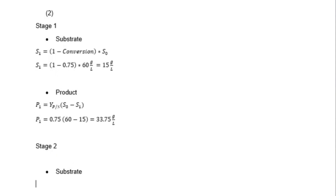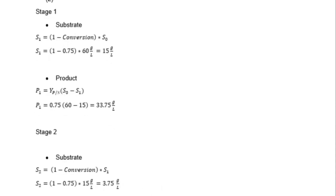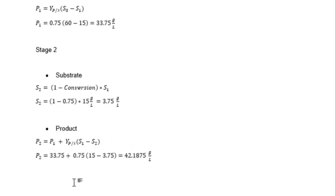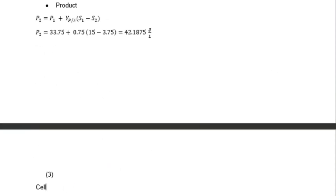Now moving to stage two. S2 = (1 − conversion) × S1 = (1 − 0.75) × 15 = 3.75 grams per liter. For the product at stage two, P2 = P1 + Y_PS × (S1 − S2). Substituting the values calculated above gives P2 = 42.1875 grams per liter.